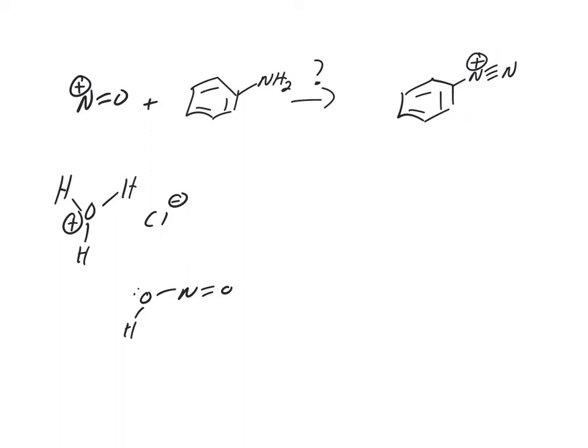So this is a diazonium salt. We're trying to turn this nitrogen into a good leaving group. Right now it's not. So the way to do that is this NO reagent. This is a nitroso. And when we do that, we start with a strong acid. So how do we make this?